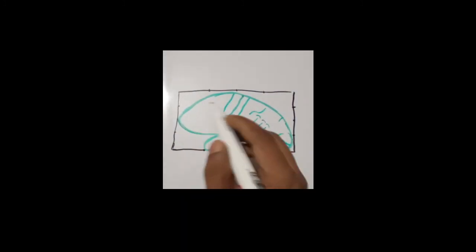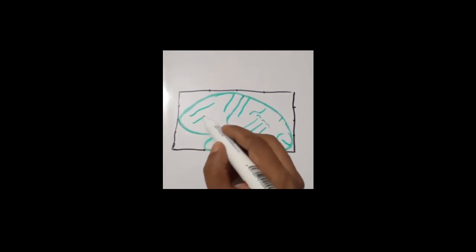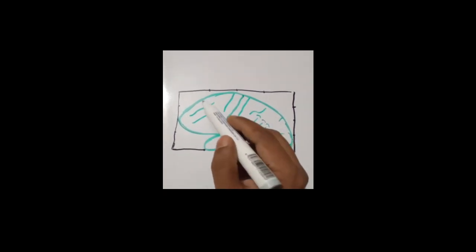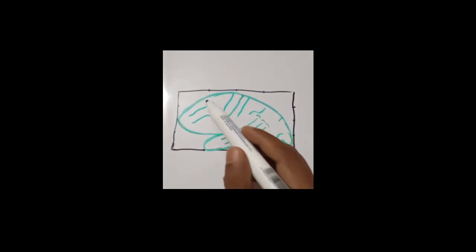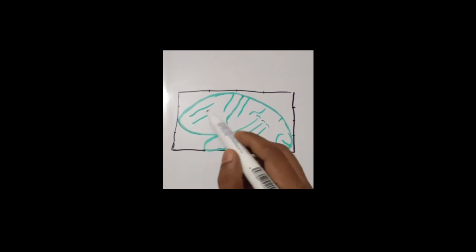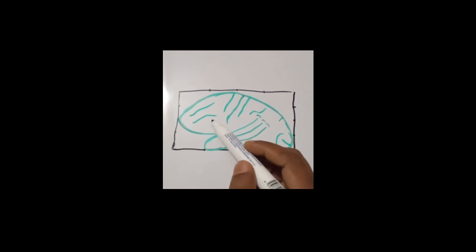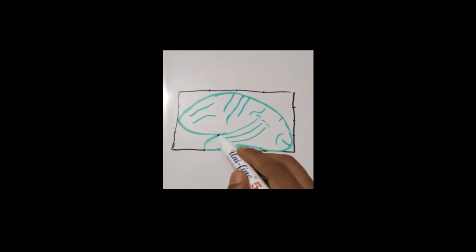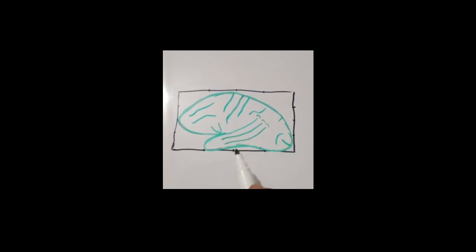In the frontal region there will be one superior frontal sulcus and one inferior frontal sulcus. The area above the superior frontal sulcus is the superior frontal gyrus. The area between the superior frontal sulcus and inferior frontal sulcus is the middle frontal gyrus. The area below the inferior frontal sulcus is the inferior frontal gyrus. There will also be two more rami of the lateral sulcus — the anterior ramus and the ascending ramus.